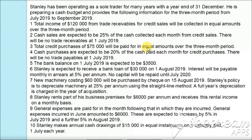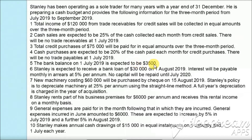Total credit purchases of $75,000 will be paid in equal amounts over the three months period. Cash purchases are expected to be twenty percent of the cash paid each month for credit purchases. There will be no trade payables at 1st July 2019. The bank balance on 1st July 2019 is expected to be $33,500.